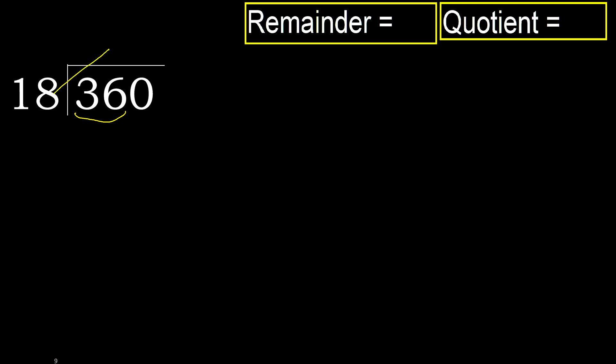18 multiplied by which number is nearest to 36 but not greater? 18 multiplied by 3 is 54 — 54 is greater. 18 multiplied by 2 is 36, which is not greater.